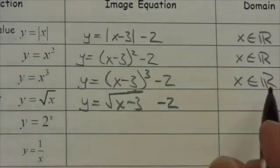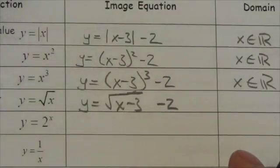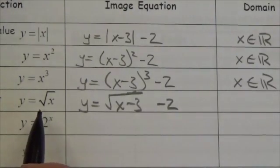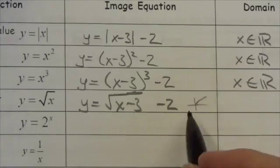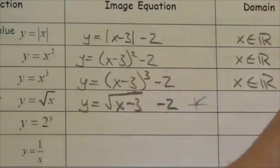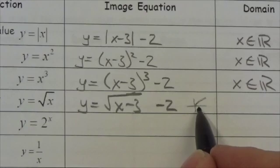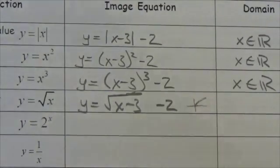Now this question asks me to identify the new domain and range. Well, think about what it is for a square root. A square root function starts at the origin and kind of swoops up to the right here. So its domain is going to be greater than or equal to 0.